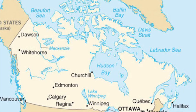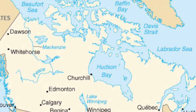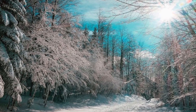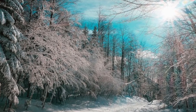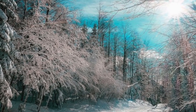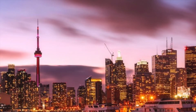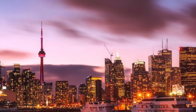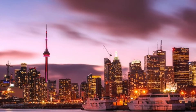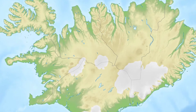This map shows Canada, which is just above the United States. Because Canada is farther north, the temperatures are much colder. The winter temperatures can even be as cold as negative 40 degrees Fahrenheit. Toronto is the largest city in Canada and is the capital of the province of Ontario.